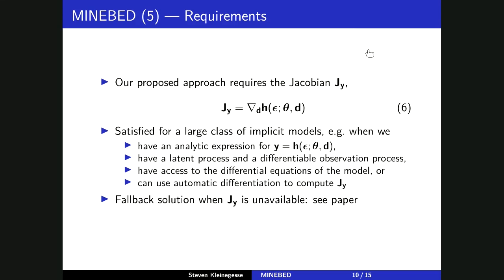Our approach requires knowledge of the Jacobian J, defined as the gradient of the deterministic sampling path with respect to the designs. While this limits generality somewhat, it's satisfied for a large class of implicit models — for instance, where we have an analytic expression for the deterministic function h (as in the PK model), where we have a latent process and a differentiable observation process, where we have access to differential equations of the model, or where we can use automatic differentiation to compute the Jacobian. As the capability of automatic differentiation improves, the generality of our method will also improve.